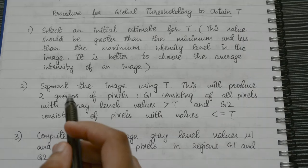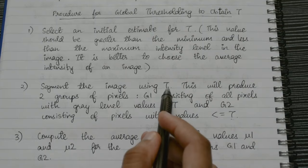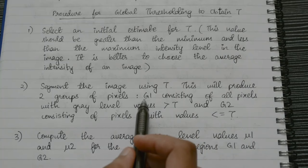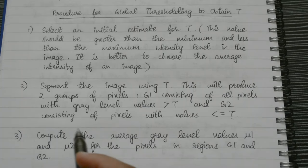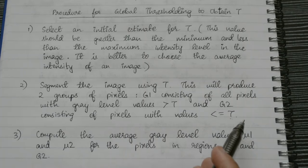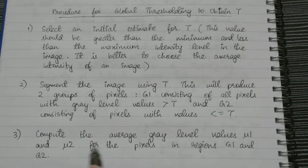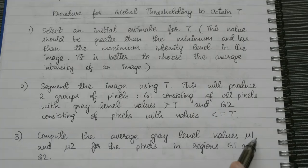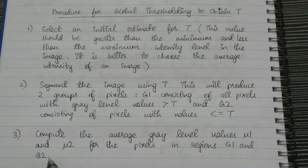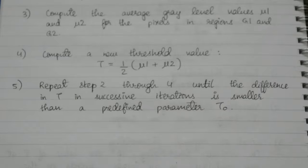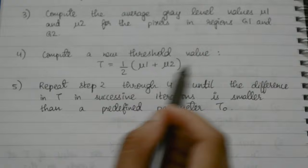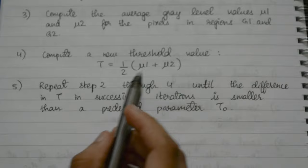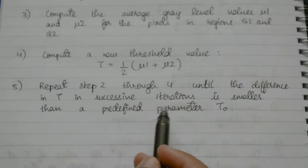Once that is done, segment the image using t by dividing it into two groups of pixels, g1 and g2. G1 has all pixels with gray level values greater than t, and g2 consists of pixels with values less than or equal to t. Then compute the average gray level values mu1 and mu2 for g1 and g2 respectively. After that, compute the new threshold value: t equals half of (mu1 plus mu2). Then repeat steps 2 through 4 until the difference in t in successive iterations is smaller than a predefined parameter t0.